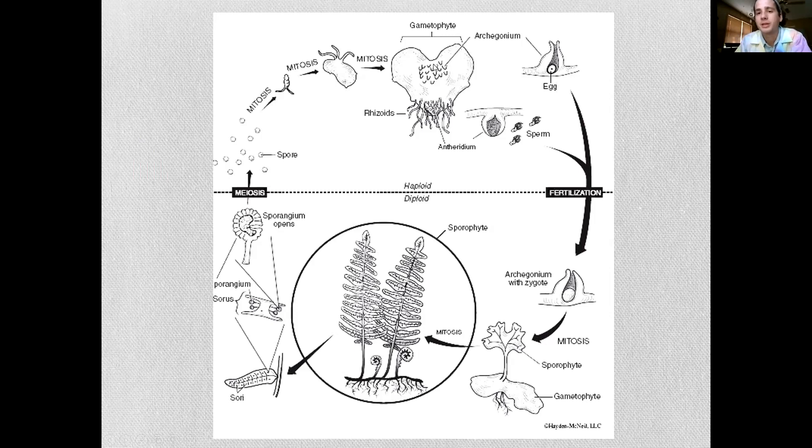The large things are going to be archegonium. Arch means egg. Antheridium means sperm. So anther is male, arch is egg.